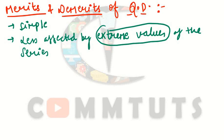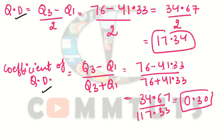So here, the second method of dispersion — interquartile range, quartile deviation, and coefficient of quartile deviation — is complete. In the next tutorial, we will start the third method, which is mean deviation. Practice these questions and topics before the next tutorial.